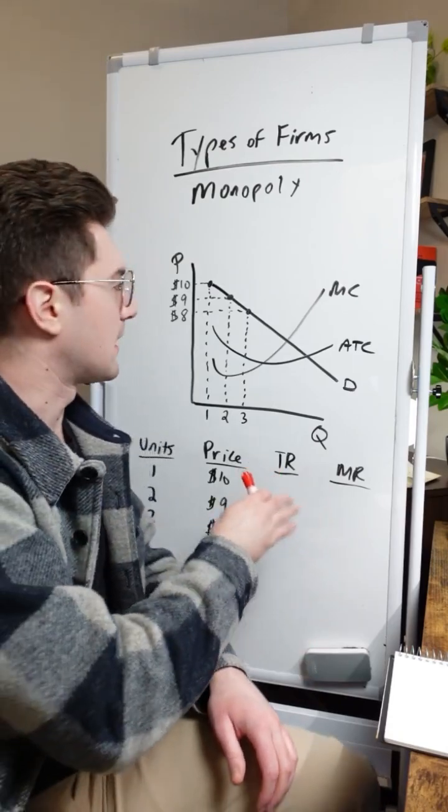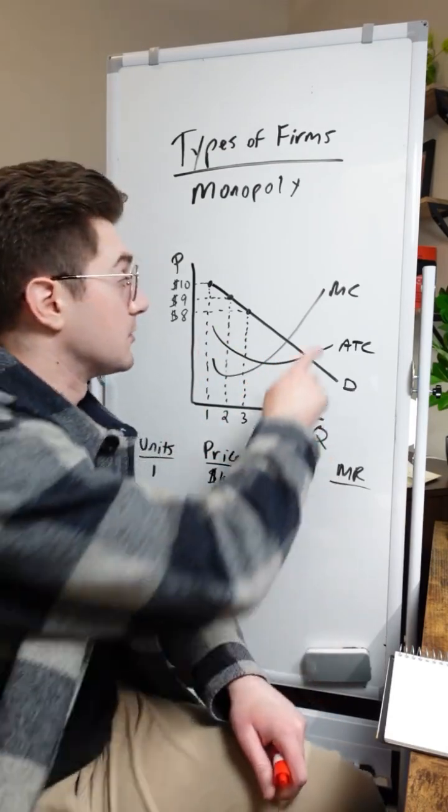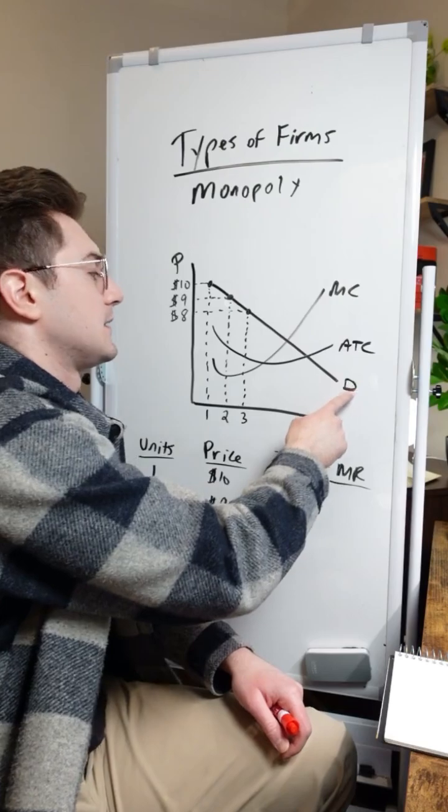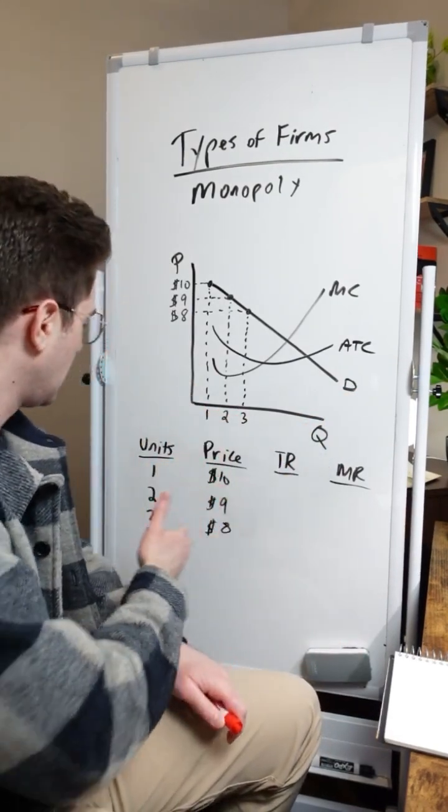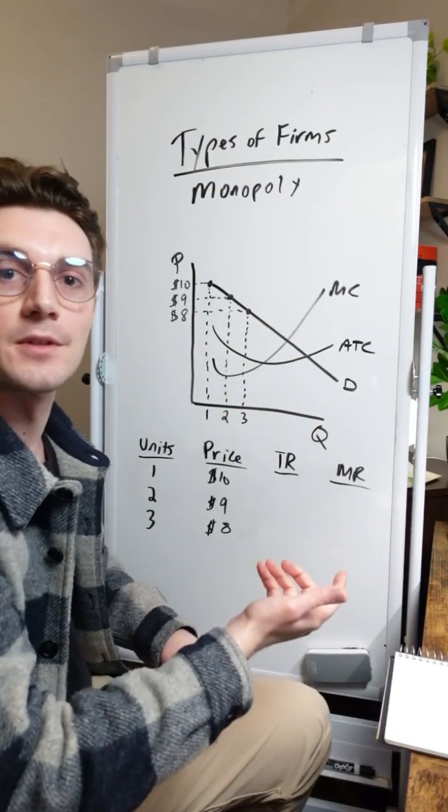So what I've done here is I've mapped out three of the core curves for monopolies: marginal cost, average total cost, and demand. And I want us to assess how total revenue for this monopoly changes at each unit of output here depending on the price that we're setting.